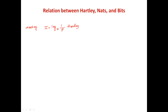If measuring information content in nats, then I = log(1/p) to base e, in nats. If measuring in bits, then I = log(1/p) to base 2, in bits. So depending upon the base of the logarithm, we measure information content as hartley, nats, or bits.